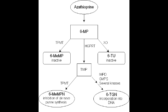What are the clinical uses of azathioprine? Azathioprine can be used after kidney transplantation. It can also be used for autoimmune disorders including glomerulonephritis and hemolytic anemia.